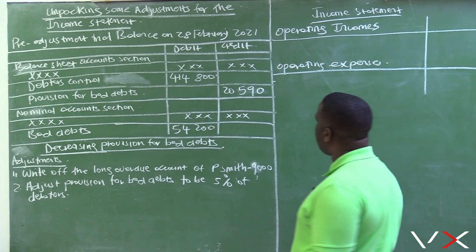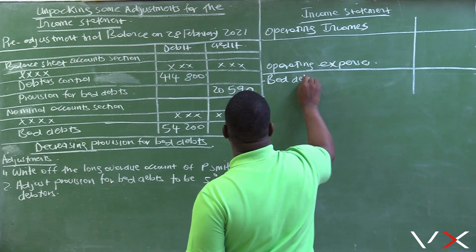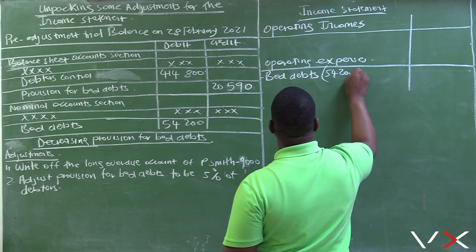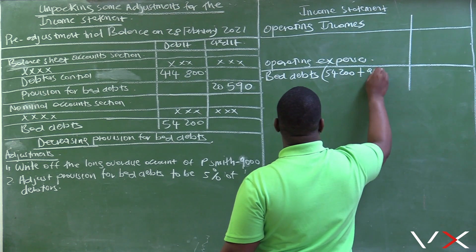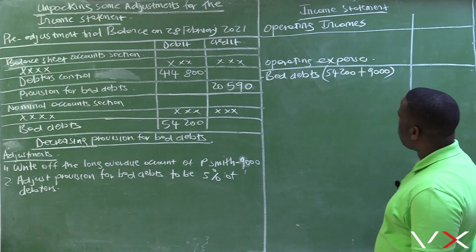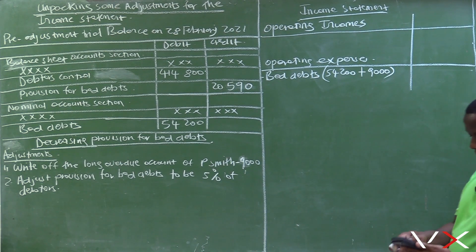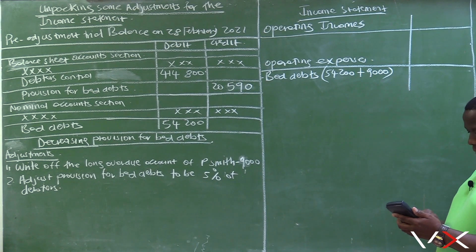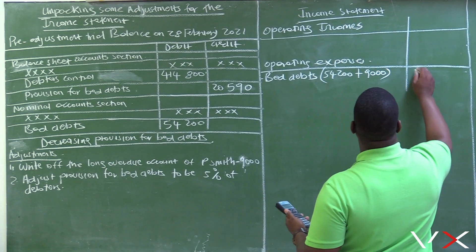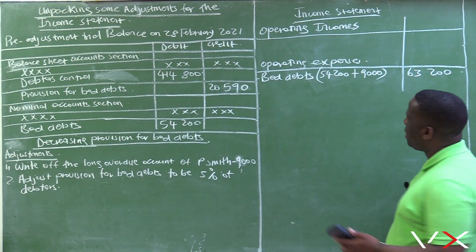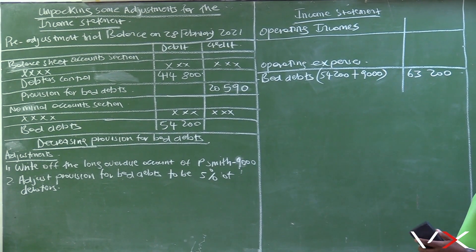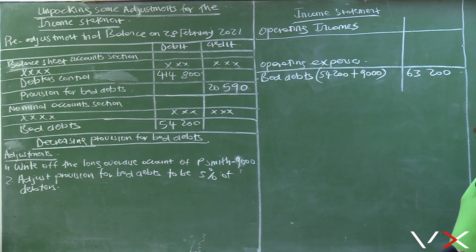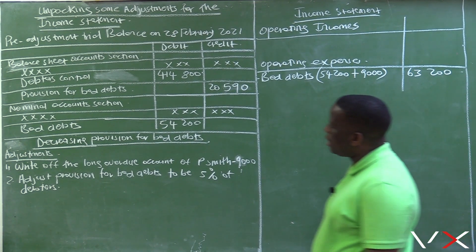Writing off bad debts will be recorded under operating expenses. The amount given in the trial balance is 54,200, and we are writing off a further 9,000. So 54,200 plus 9,000 equals 63,200. Our operating expenses for bad debts will then be 63,200 — up from 54,200 because of adjustment number one.